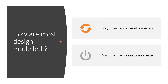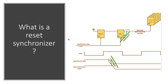Most designs are modeled to have an asynchronous reset assertion and a synchronous reset de-assertion, in which case you need a reset synchronizer. We will discuss this in detail in the next slide. A reset synchronizer is basically used to model the behavior described — that is, asynchronous reset assertion and synchronous reset de-assertion. Here you have a clock and an asynchronous reset.